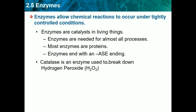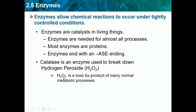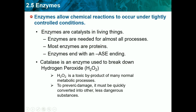Catalase is an enzyme — see, it has -ase at the end. It's used to break down hydrogen peroxide, H2O2. H2O2 is a toxic byproduct of many normal metabolic processes. To prevent damage, it must be quickly converted into other less dangerous substances using catalysts. So a catalyst in our body makes H2O2 into a different substance very fast. That's the equation for it.